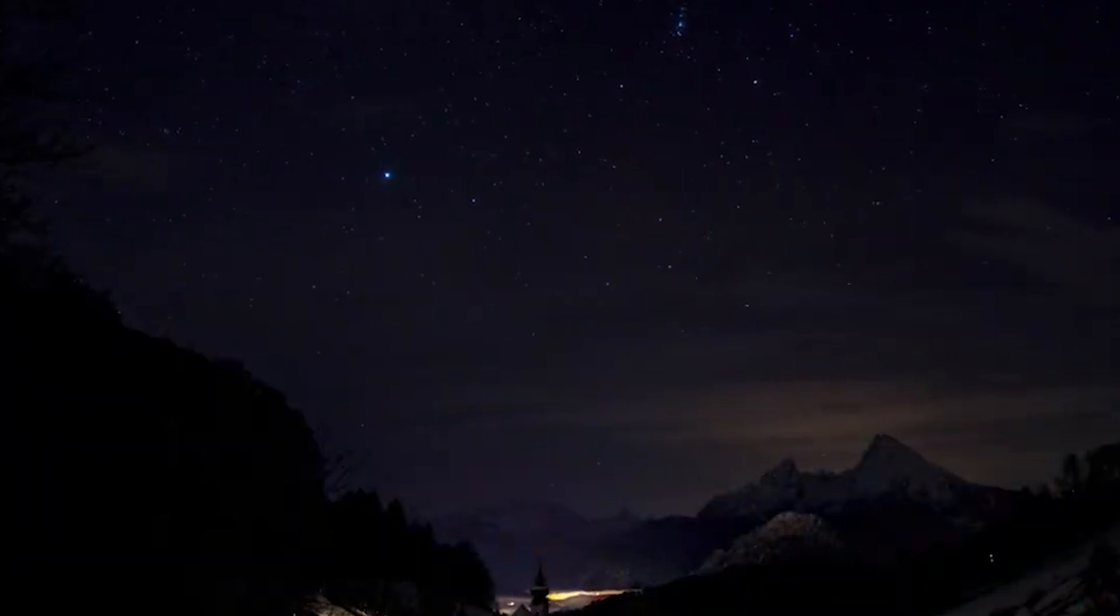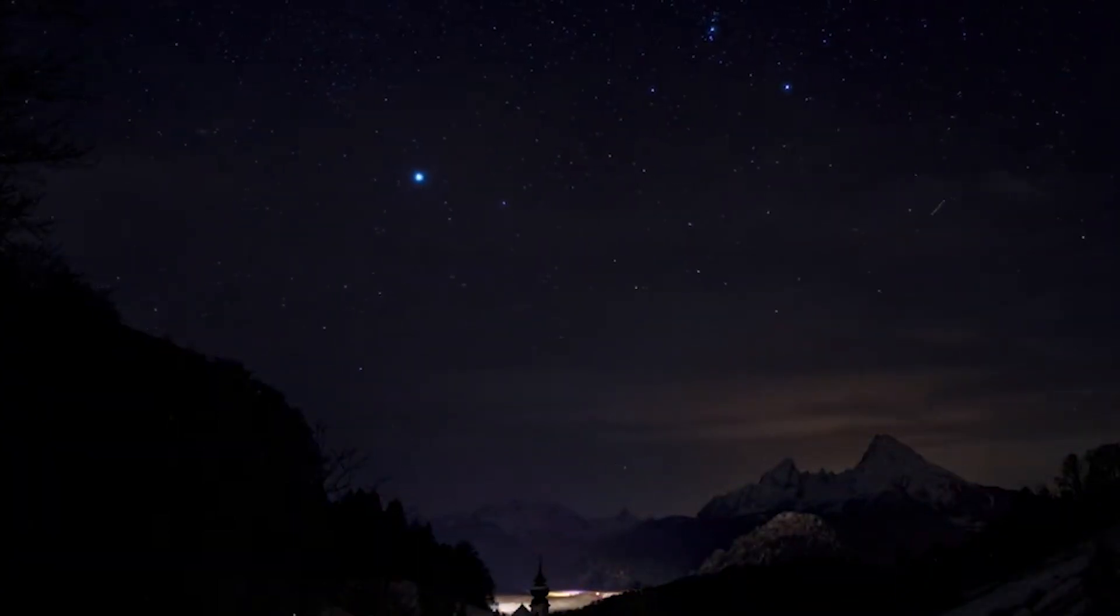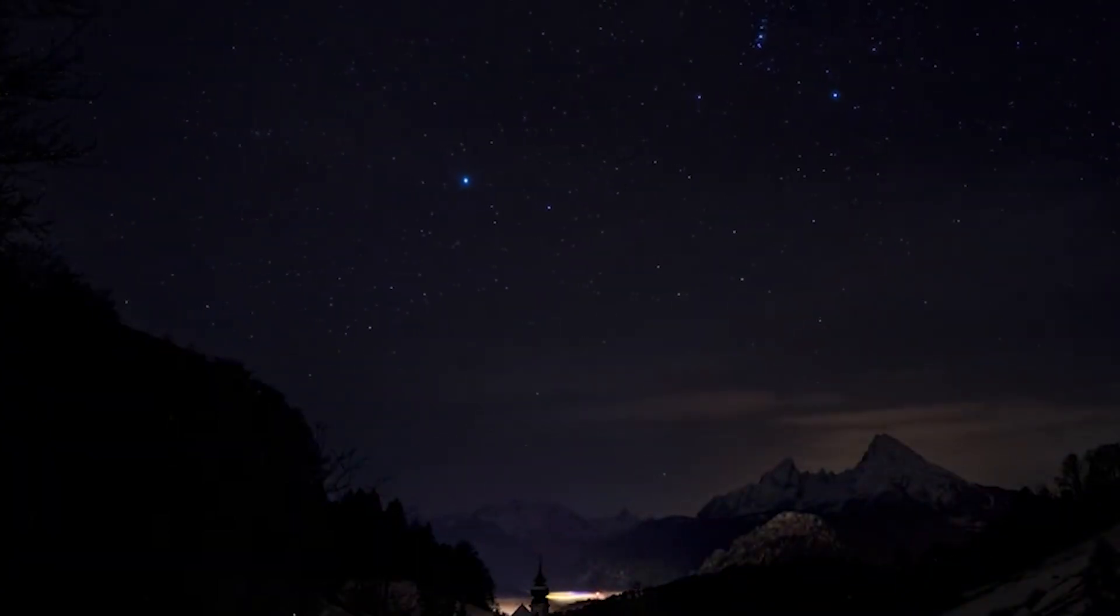Canopus is a bright supergiant star with an apparent magnitude of negative 0.74, making it the second brightest star visible from Earth after Sirius.